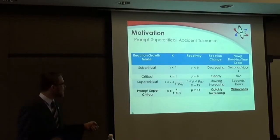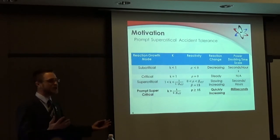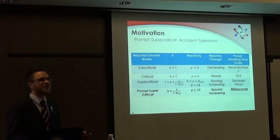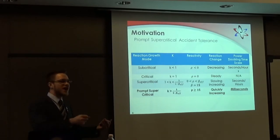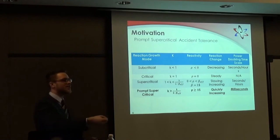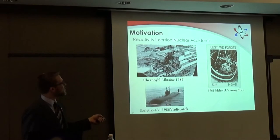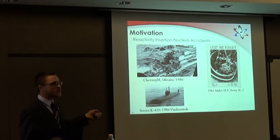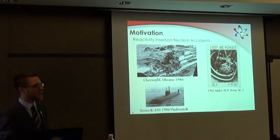As seen in the video with SL-1, you can have these prompt supercritical events. We measure reactivity in dollars. You can have an instance where your power is doubling on the order of milliseconds — meaning in a second it's too late, your reactor melts down. Human intervention isn't possible; I can't control this as an operator. I have to have some kind of passive physical feedback in the system. If that doesn't happen, you get the aftermath of the SL-1 core, Chernobyl — which blew the top off the reactor — and even a Soviet submarine that had a very similar accident. These accidents have happened and they're a big issue.